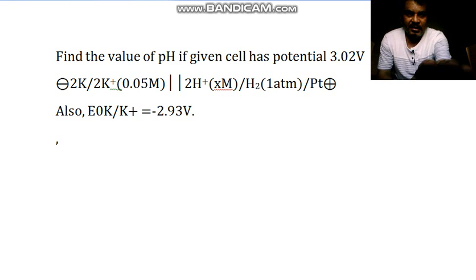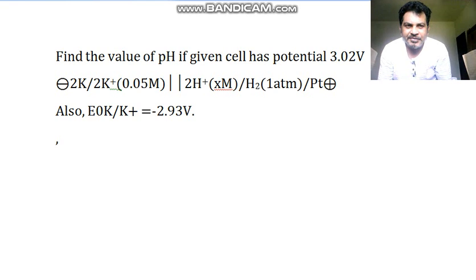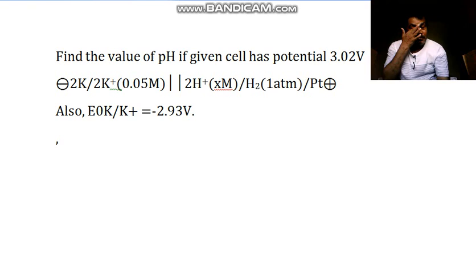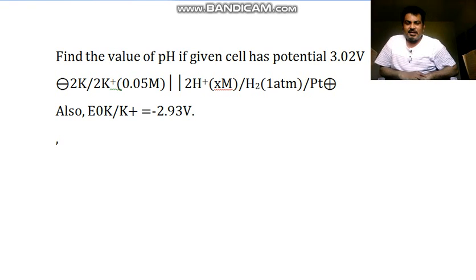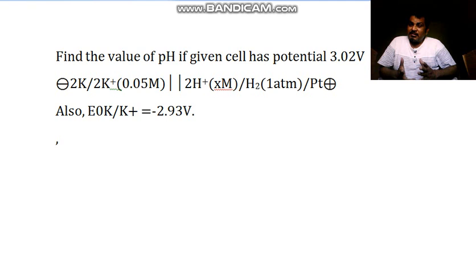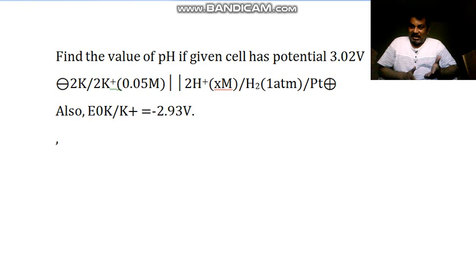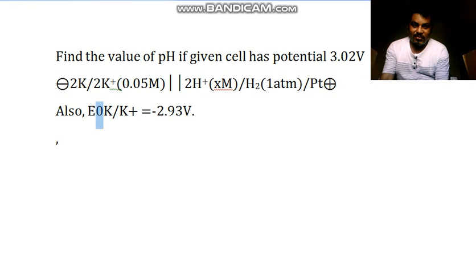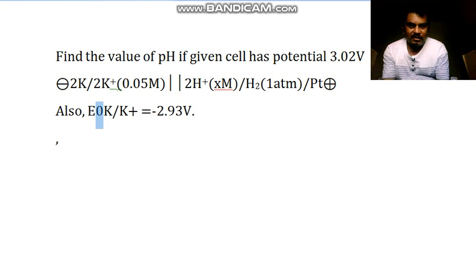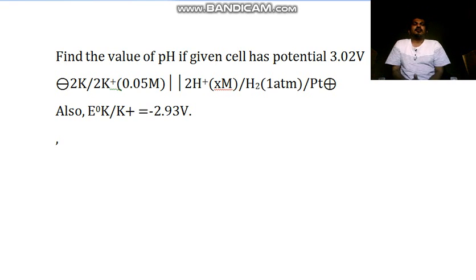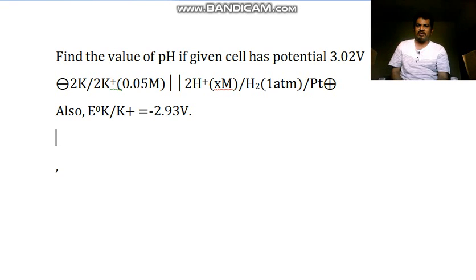Welcome dear students. In the previous lecture we were finding the value of pH, but something was wrong and the video was stopped. Now we are starting the same question again: find the value of pH if the given cell has a potential of 3-point-something and the e-degree value is given. No problem, we are going to start the solution now.